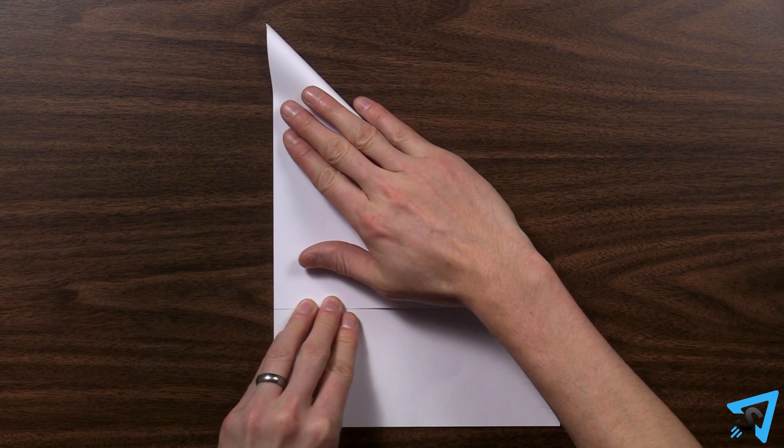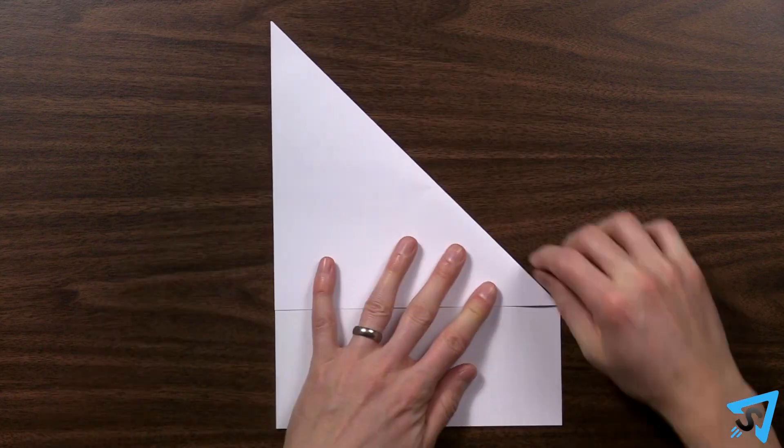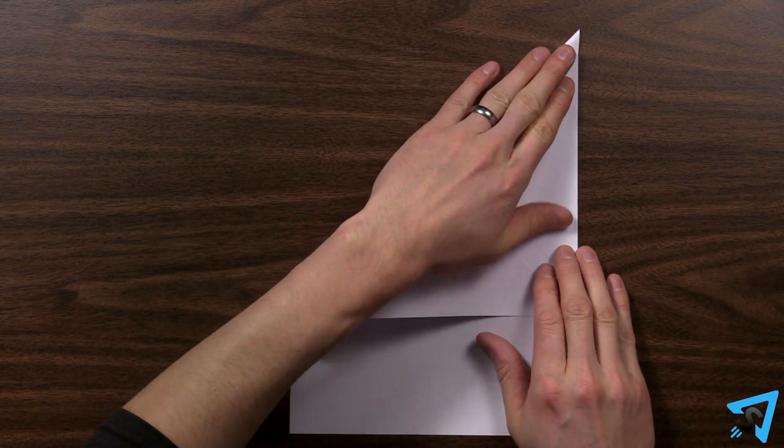Fold the top right corner down against its opposite side, then open it up and repeat the fold with the top left corner.